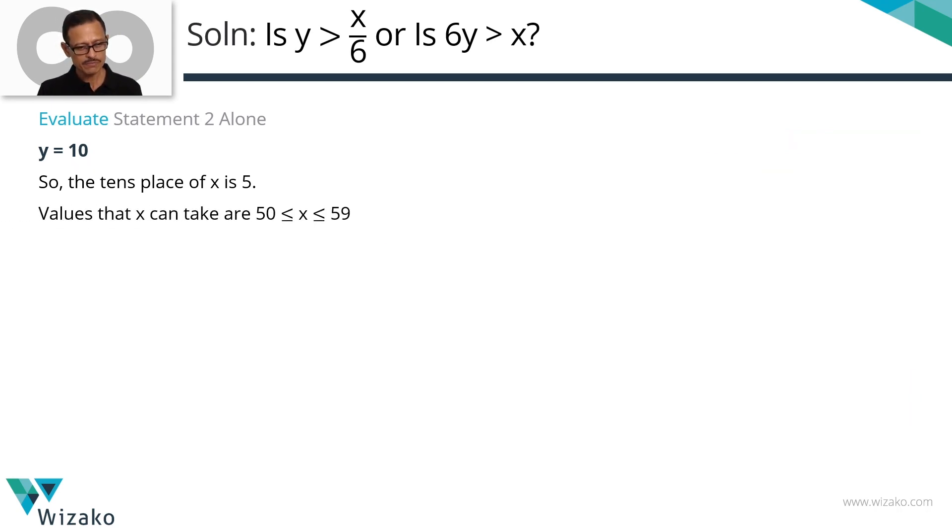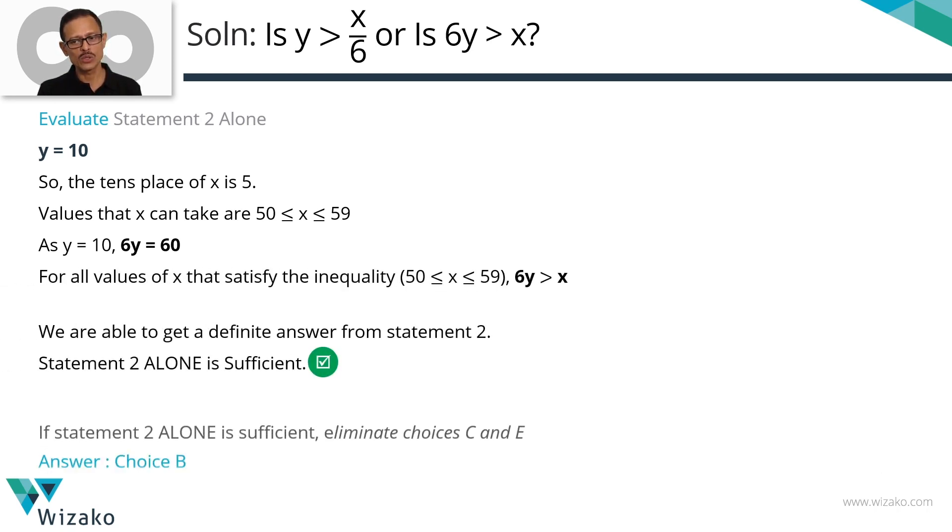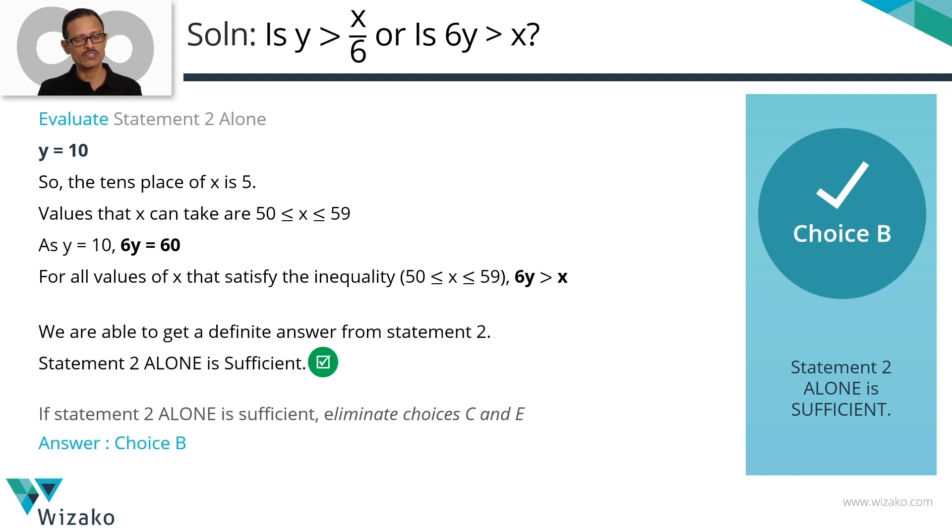Summarize it in a printed form. X can take values from 50 to 59 because Y is 10, the tens place of X is 5. In all of these cases, 6Y which is 60 is going to be greater than X. We have a conclusive answer. Statement 2 alone is sufficient. Choice B is the answer to the question.